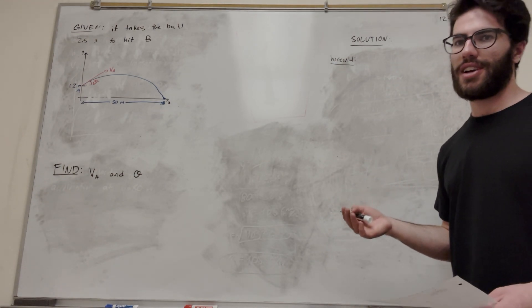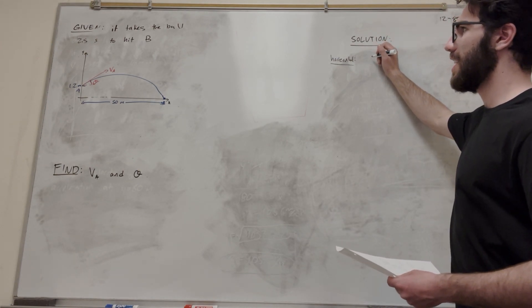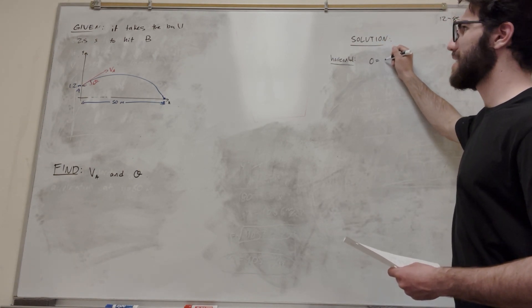So horizontal, we're going to use that long kinematics equation. Let's write it out. So x-final, right? x-final is equal to... is equal to x-initial.